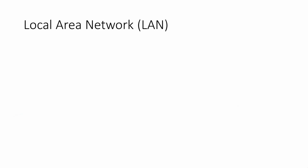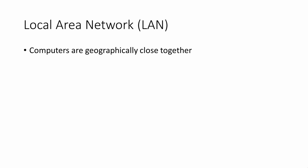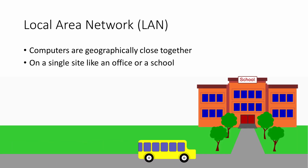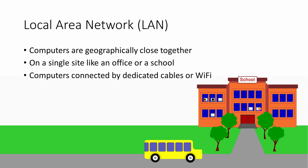In a local area network, or LAN, computers are geographically close together. This means they are usually in the same town or the same city — in fact, usually on the same site. For example, all of the computers in an office or all of the computers in a school or college. Desktop computers in a LAN are usually connected via cables, but if there are laptop users as well, they are probably connected using Wi-Fi. One of the biggest advantages of a LAN is it can be used only by the people who are allowed to use it — it's private and secure.